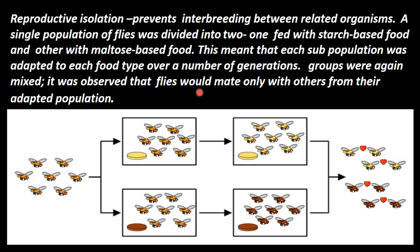These are the basic five points. There is reproductive isolation. Reproductive isolation — why is it? Reproductive isolation is the prevention of interbreeding between related organisms — that is, species closely related to one species. It prevents the interbreeding between related organisms. That is called reproductive isolation.